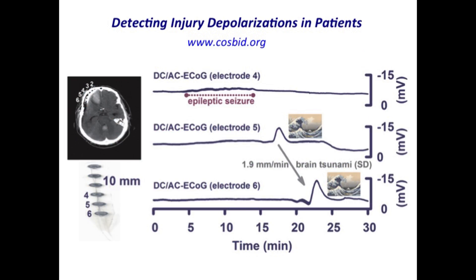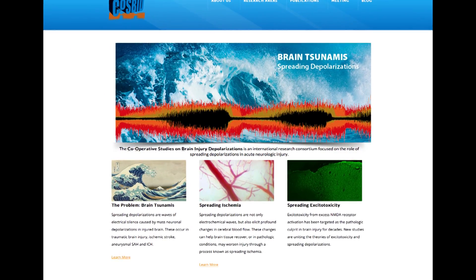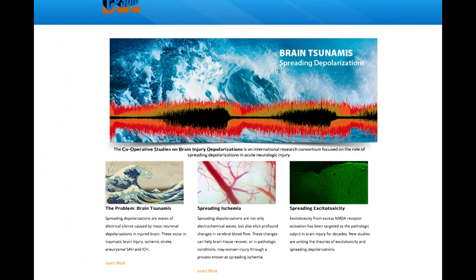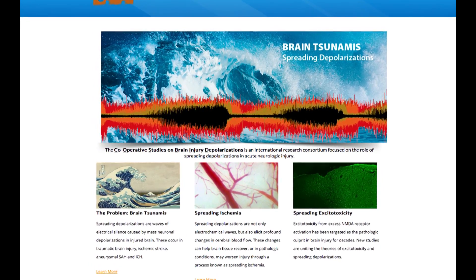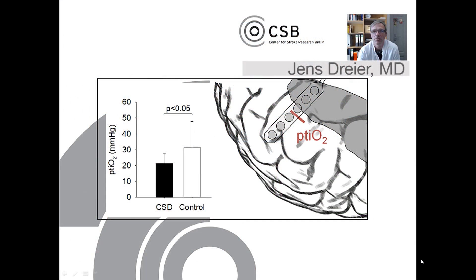One reason injury depolarizations have been underappreciated is the fact that they are not easy to detect clinically. As of today, only invasive recording devices implanted over or inside the brain can reliably detect injury depolarizations in humans. The COSBIT collaboration, launched 10 years ago, managed for the first time to show in a large number of patients how prevalent injury depolarizations were in human stroke, intracranial hemorrhage, and traumatic brain injury. Spreading depolarization occurs in almost 100% of patients with malignant hemispheric stroke.